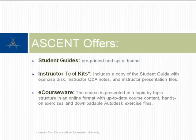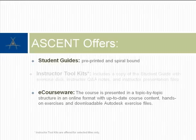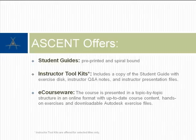When you purchase courseware from Ascent, you have the following options. Student guides, which will arrive pre-printed and spiral-bound for your convenience. Instructor toolkits, ideal if you are teaching the course. With this option, receive a copy of the student guide with an exercise disk, instructor question and answer notes, and instructor presentation files, which include timing suggestions for delivery of the course.